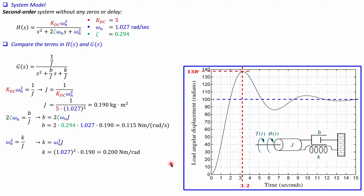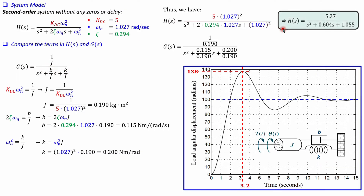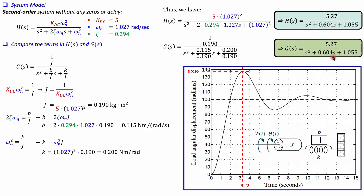The model is now complete with KDC, omega_n, and zeta substituted in, as well as the values of J, b, and k. Working this out gives approximately the same transfer function from both approaches — rounding to some precision gives exactly the same result, confirming consistency between the model and the calculated values.